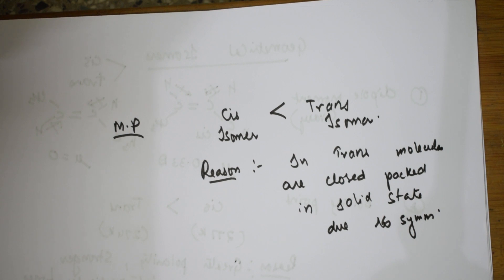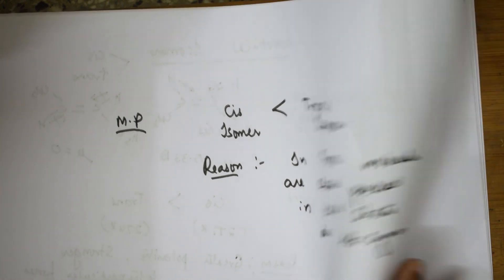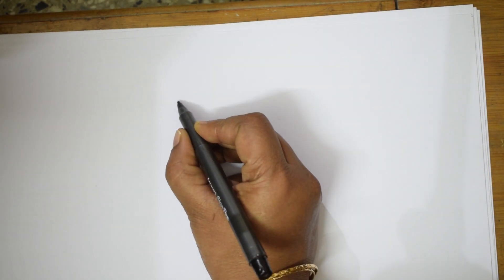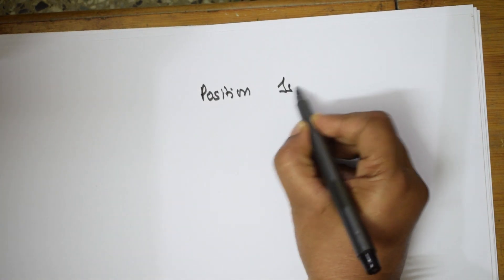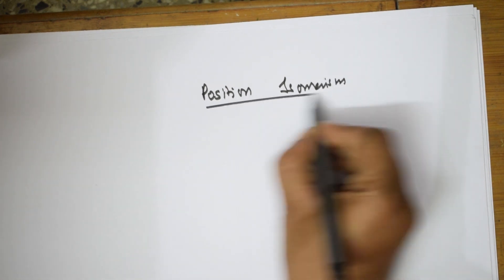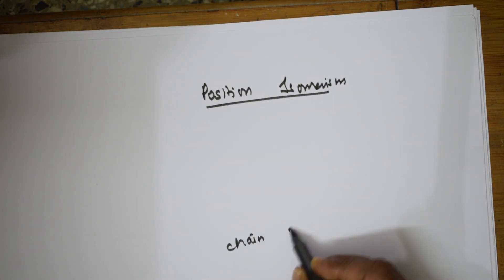I will be doing a worksheet based on geometrical isomerism. Before that, I will give you a small example about position isomerism as well, since the worksheet will include both. Let me also take an example of chain isomerism.